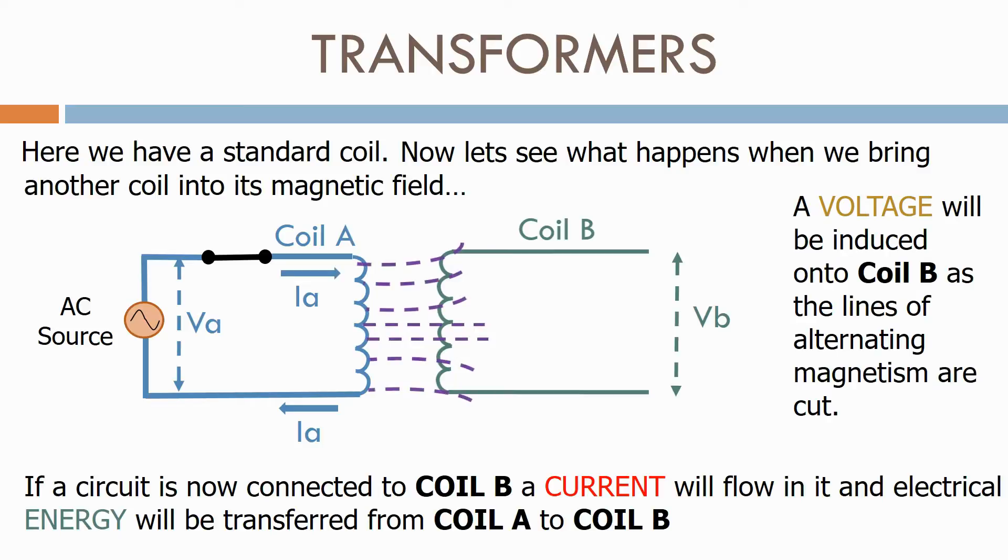If a circuit is now connected to coil B, a current will flow in it and electrical energy will transfer from coil A to coil B.